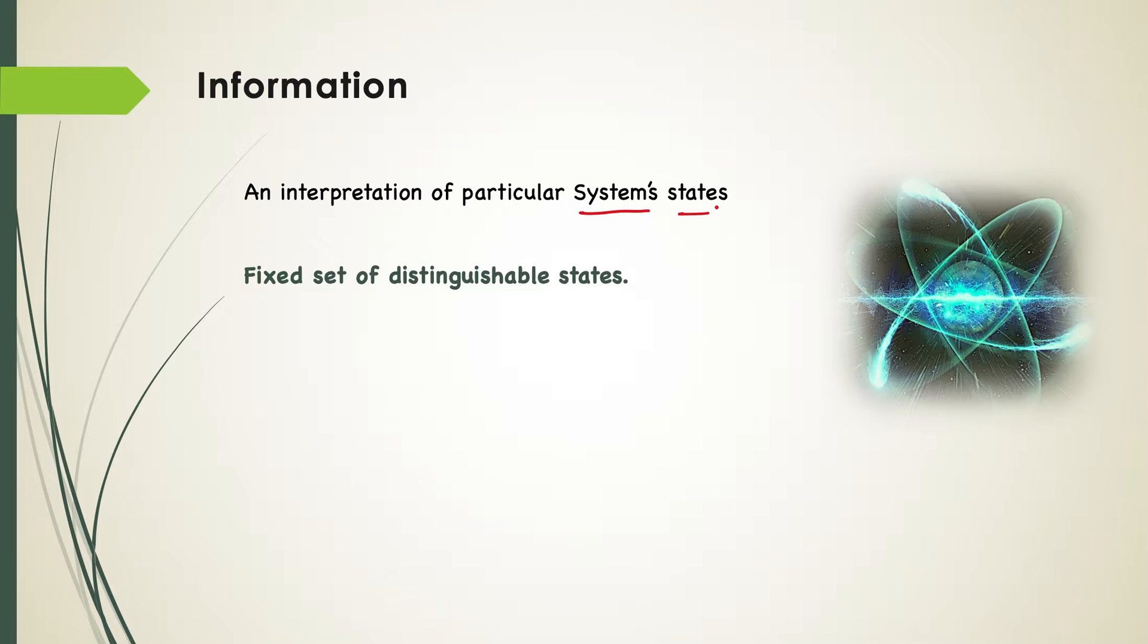Since a computational system has a fixed set of distinguishable states, I choose the current state of the system to be the information it presents. The system may have n states, but there will be one current state. We can denote that as the information that it's presenting right now. Now we know what is a computational system and what are the states of the system. How do we interpret the system states? That is, how would we read information from it?